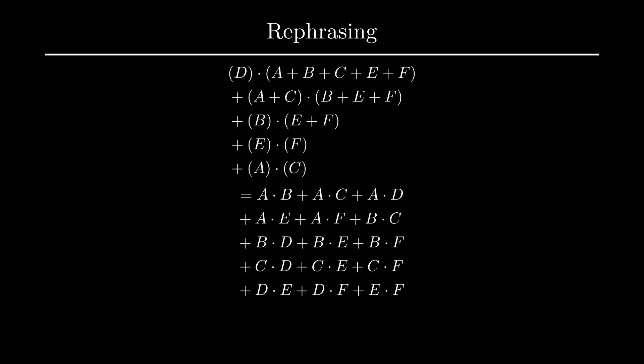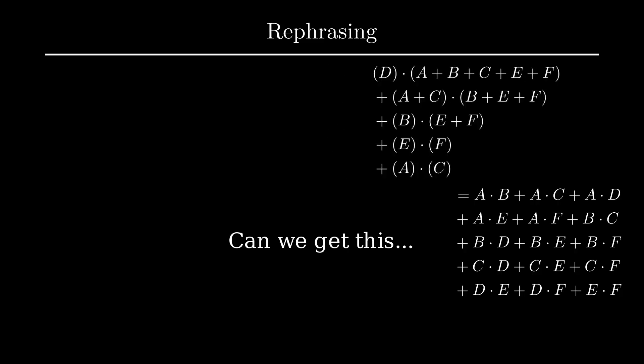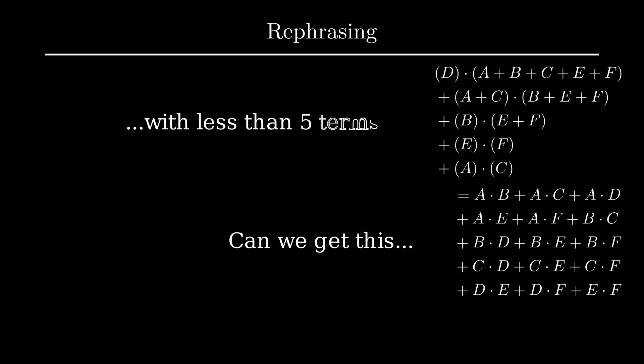In this new representation, the question becomes whether we can get the same sum of all 15 fights, but as the sum of less than 5 multiplications. The Graham-Pollack theorem says we need 5 multiplications.